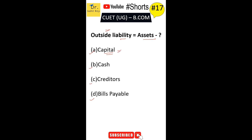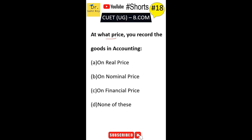At what price do you record the goods in accounting? First option is on real price. Second option is on nominal price. Third option is on financial price. Fourth option is none of these. The correct answer is Option A — you record the goods in accounting on real price.